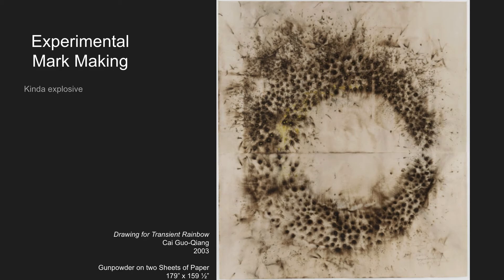Here's one example: you can use fireworks. This artist, Cai Guo-Qiang, is known for making art with explosives and gunpowder. What we're looking at is paper where he carefully sprinkled little bits of gunpowder in a pattern, then set the gunpowder off. It burned very quickly, probably set the paper on fire in some places, but he was able to make all these quick little spots.